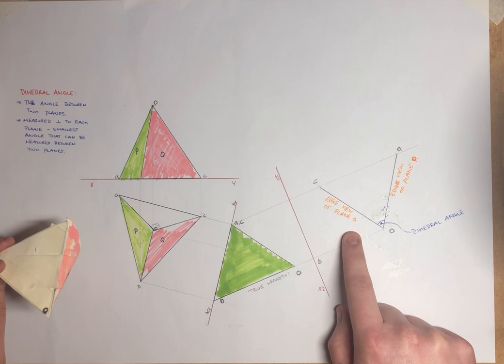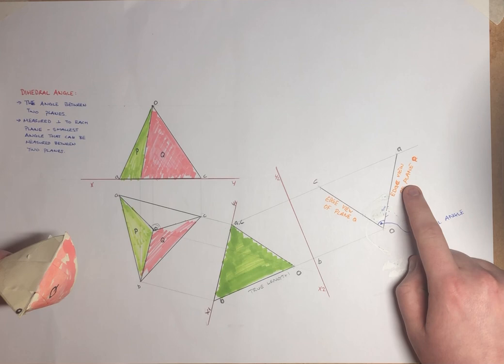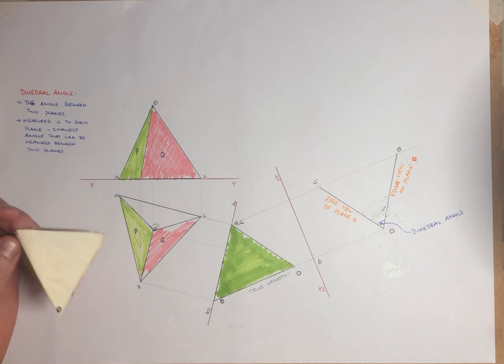So that's our edge view of our plane Q. Just the edge view here, plane Q. And then here we have A to O, which is our edge view of our plane P. So that's just here. Here in our model as well. So in between there is our dihedral angle. And that's just the basics of finding our dihedral angle.